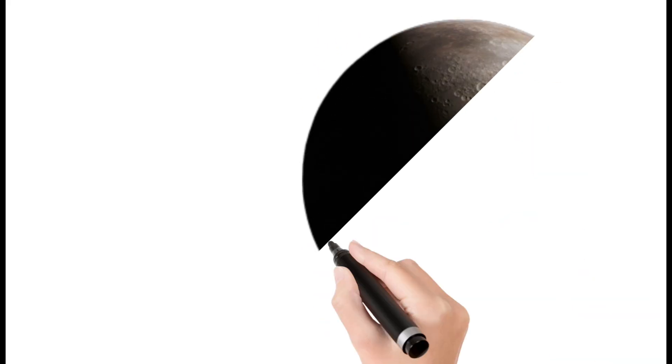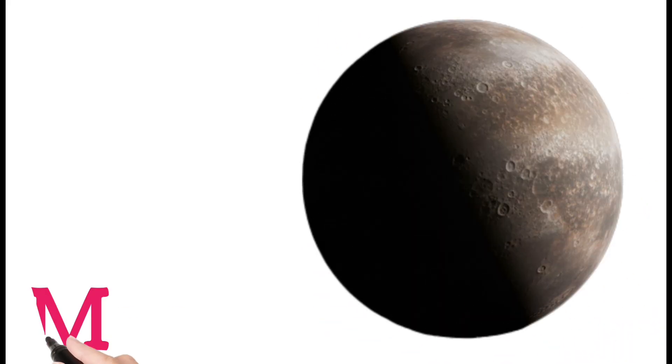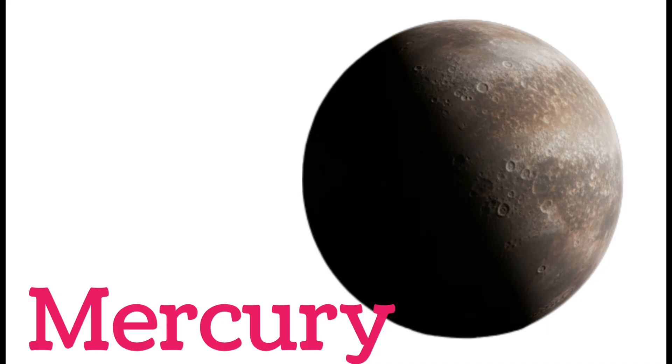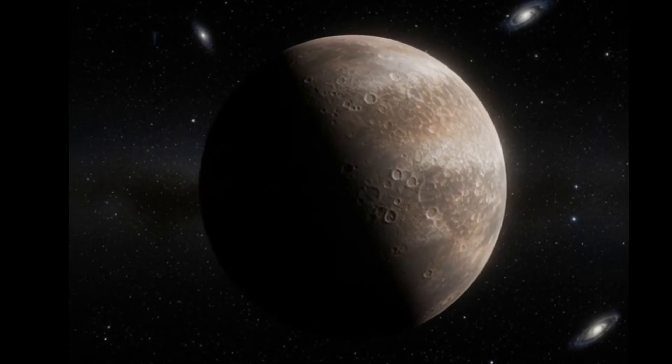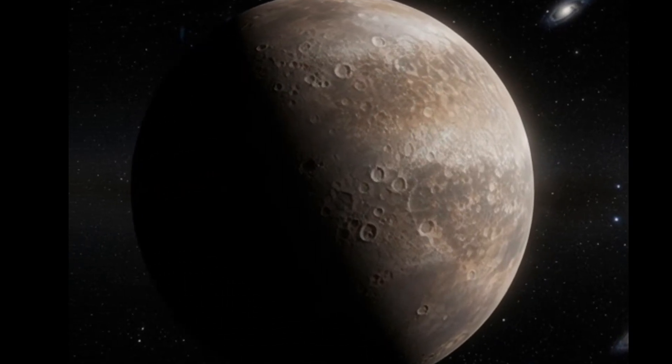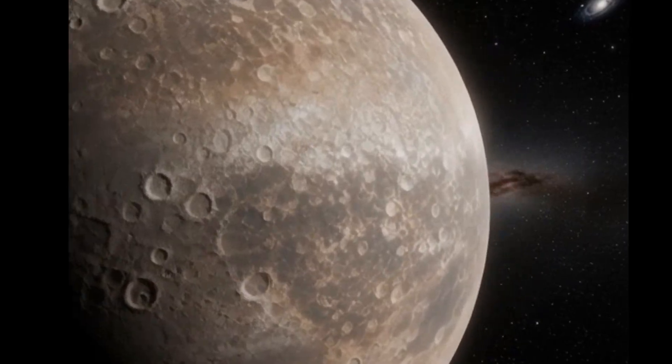Next, Mercury. Mercury is the closest planet to the Sun. It has extreme temperature changes. The planet has no atmosphere. A year on Mercury is very short.